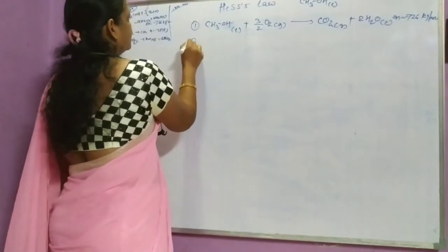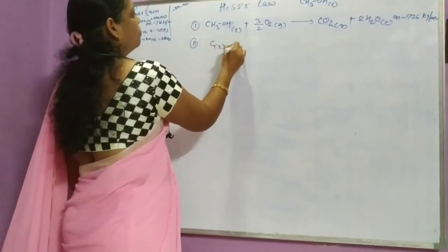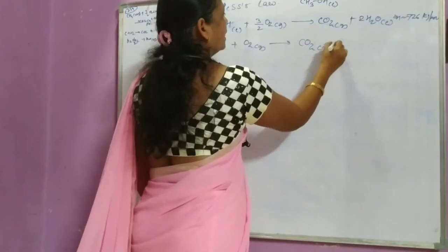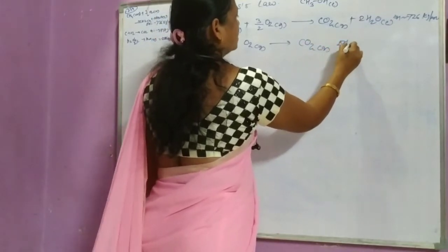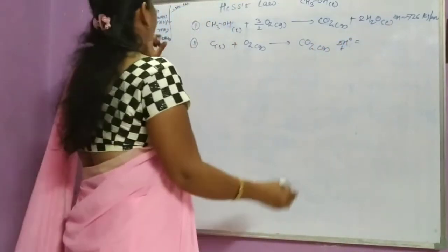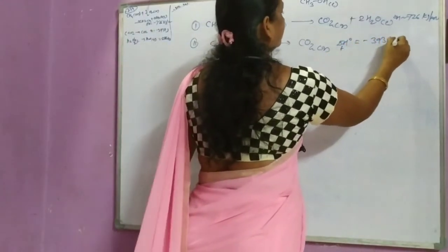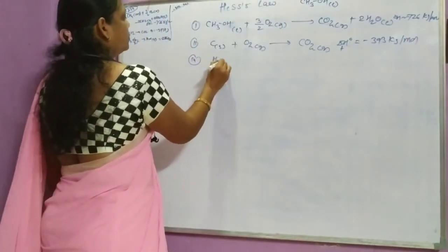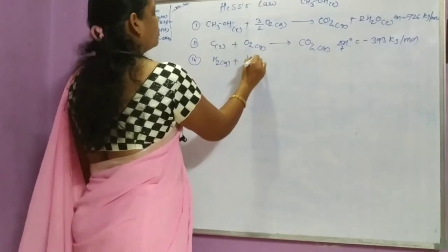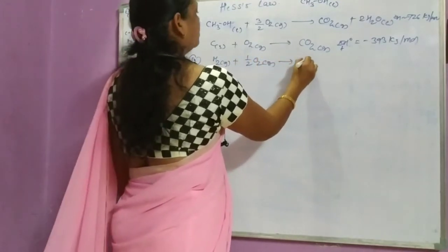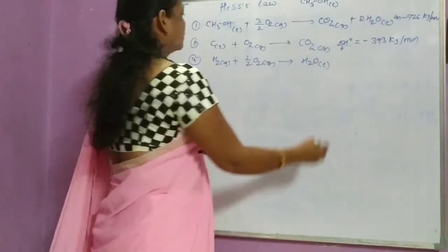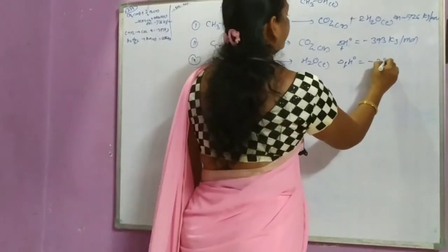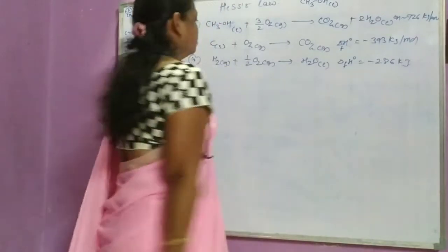The second reaction: C solid plus O2 gas giving CO2 gas, and ΔH° = −393 kJ per mole. The third reaction: H2 gas plus 1/2 O2 gas giving H2O liquid, and the standard enthalpy for the reaction ΔH° = −286 kJ. These three equations are given.